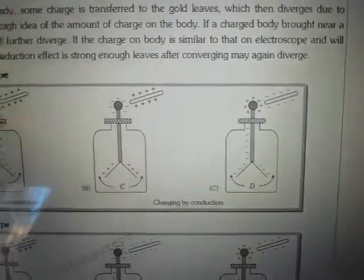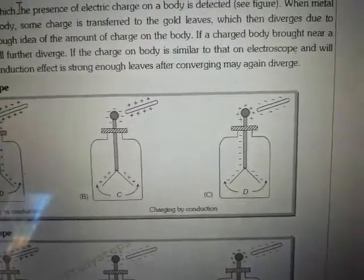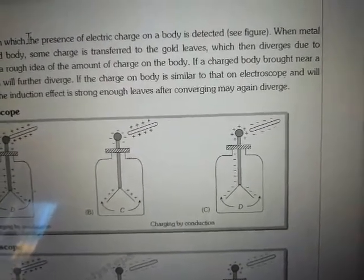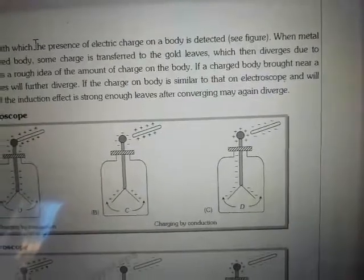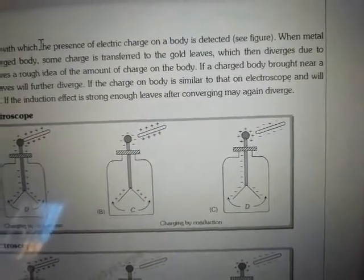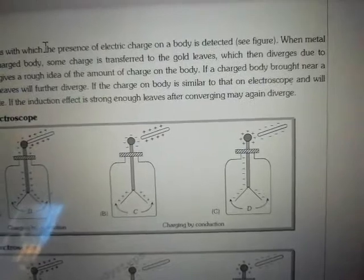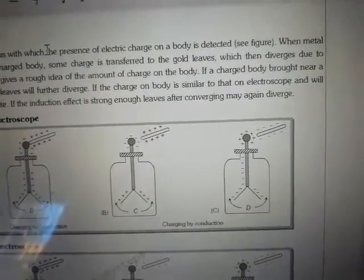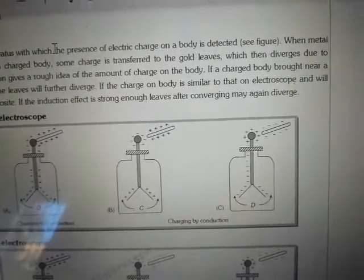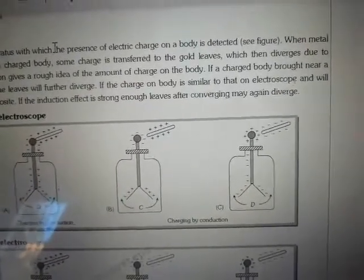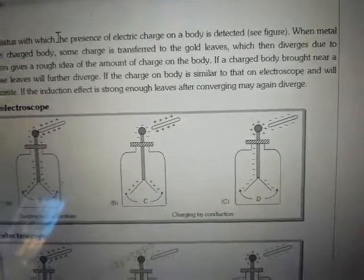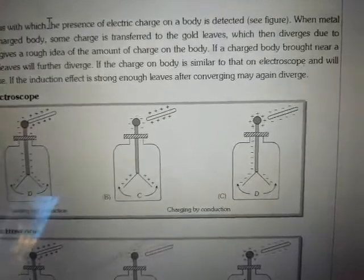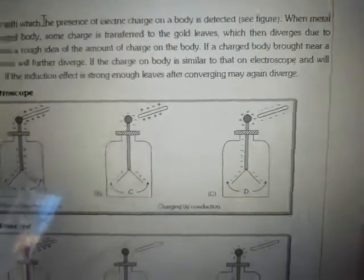If we try to apply a positive charge by induction, the conductor will develop a negative charge. By induction, the electric field due to the charged body causes positive and negative charge separation. The negative charge will be due to the metal knob, and the positive charge will be due to the gold leaf region.